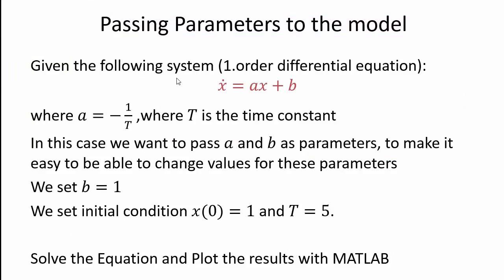Next in this example we will see how we can pass parameters to the model. In this case we have a first-order differential equation where you have some constants. A equals minus 1 over T, where T is the time constant. We can start by setting T equal to 1. Since we are going to pass the parameters, we can easily change the time constant to, say, 5.